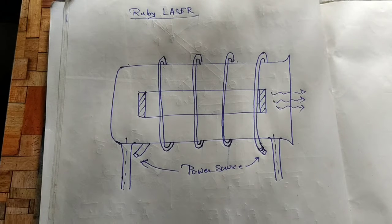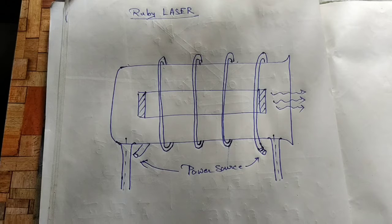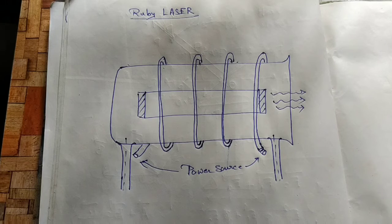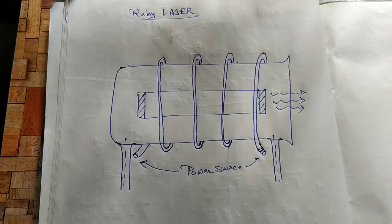Hello, I am Aurit, Assistant Professor of Gargi Memorial Institute of Technology. In today's lecture, we will try to understand how the ruby laser works. In our previous lecture, we already learned about the mechanism of the laser, how it works, and how the atom transitions from one energy level to another energy level, and those characteristics. Now we are studying some examples of the laser.